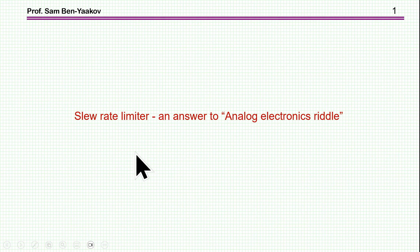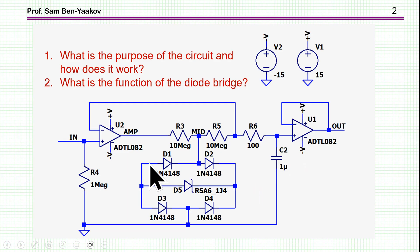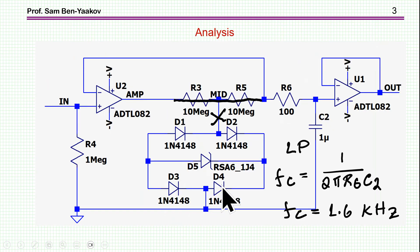Hi, I'm Sam Ben-Yaakov. This presentation is entitled Slew Rate Limiter in Answer to Analog Electronics Riddle. I've pointed a riddle that looks like that. We have here a circuit, there are two operational amplifiers, there is a diode here that looks like a clamp. And the question was, what is the purpose of the circuit and how does it work? And then what is the function of the diode bridge? So I'm going to start by actually analyzing the circuit without just giving the answer and see whether we can arrive at a conclusion what is the purpose of this circuit.